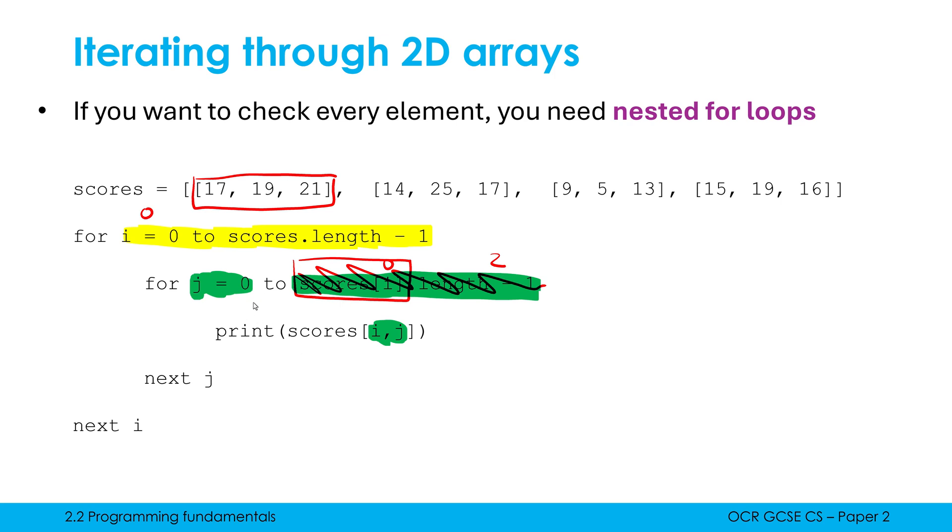The first time this inner for loop runs, we're going to print scores index i, which is 0, comma j, or j is currently 0 as well. And scores index 0 comma 0 is going to give us 17. So we would print out 17 because 17 is our first item. Now the way nested for loops work is this inner for loop needs to complete before we go back and iterate our outer for loop. So i won't change here because I'm not done with j.